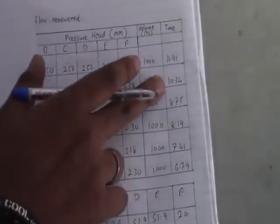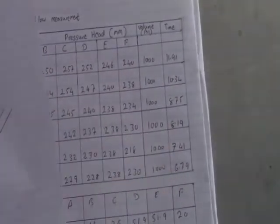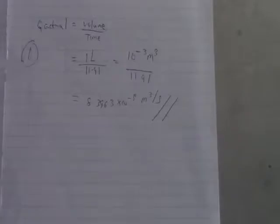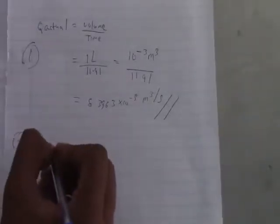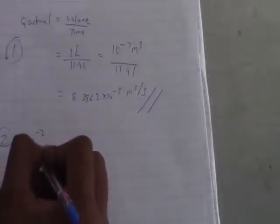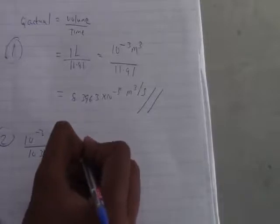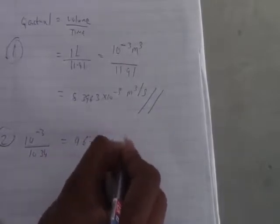For the second test, the same procedure applies: 10⁻³ divided by 10.34 seconds, giving 9.6711 × 10⁻⁵ meter cubed per second. We repeat this for tests three through six.